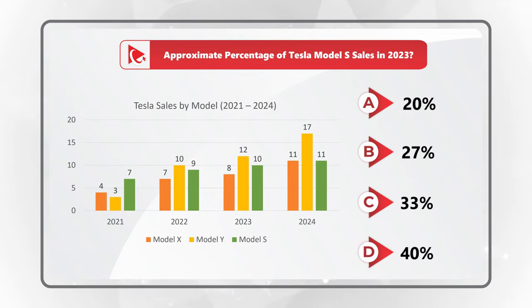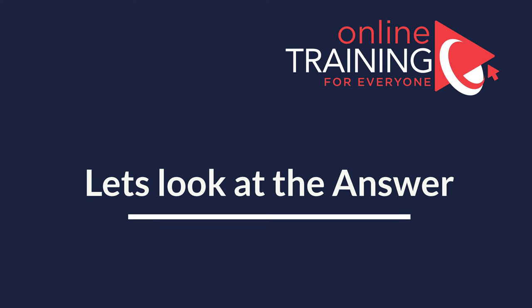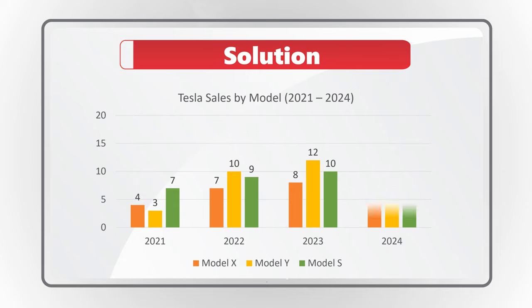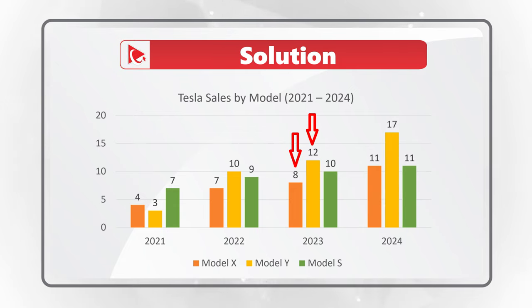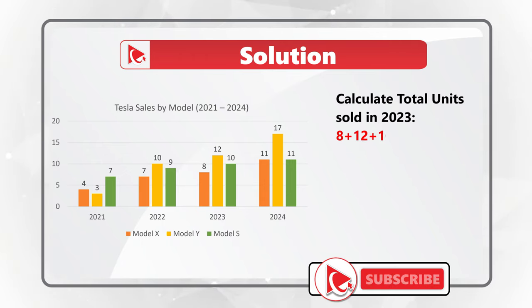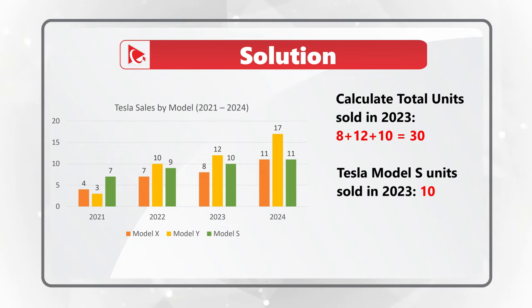Give yourself a little bit of time — maybe pause this video — to see if you can come up with the solution. Let's take a close look at the 2023 sales. We sold 8 units of Model X, 12 units of Model Y, and 10 units of Model S. Total units sold in 2023 would be 8 plus 12 plus 10 equals 30. We sold 10 units of Model S, which is one-third of 30 units. So the correct choice is one-third of 100%, approximately 33%.